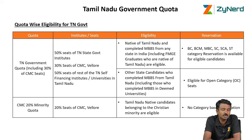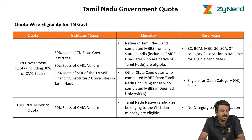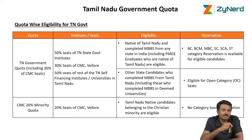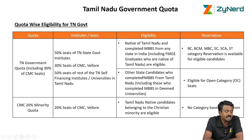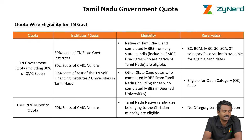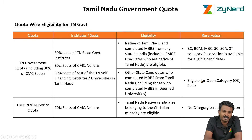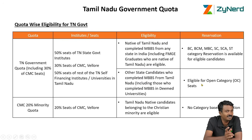There are two quotas. Under the Tamil Nadu Government Quota — including 30% of CMC Vellore seats — everybody who is a native of Tamil Nadu is eligible, irrespective of where they did MBBS. FMG candidates who did MBBS abroad but are natives of Tamil Nadu are eligible. Nativity is usually by birth, though some get it by residence. Other state candidates who did MBBS in Tamil Nadu — including deemed universities — are also eligible, but only for open category seats. So if you are from another state, you will select only OC category. If you are a Tamil Nadu native belonging to, say, MBC category, you will select MBC and also OC.